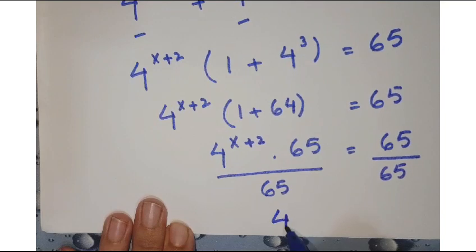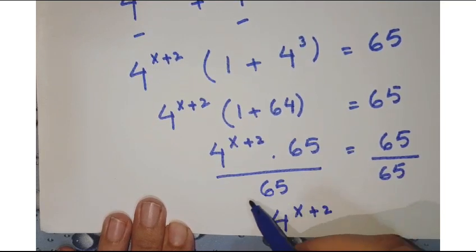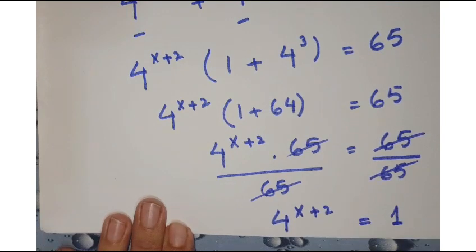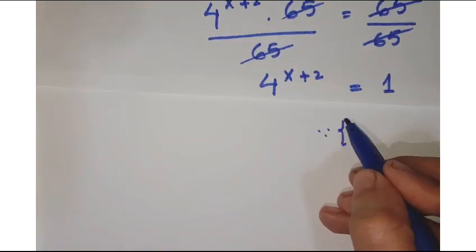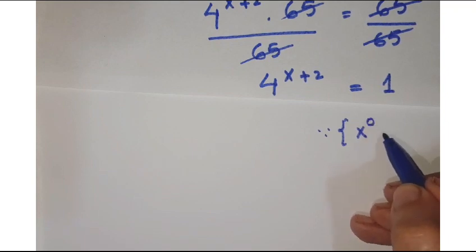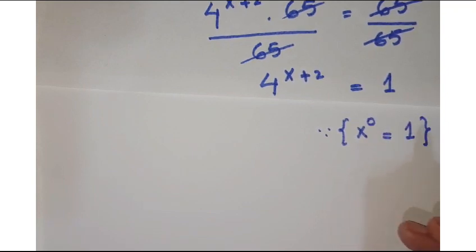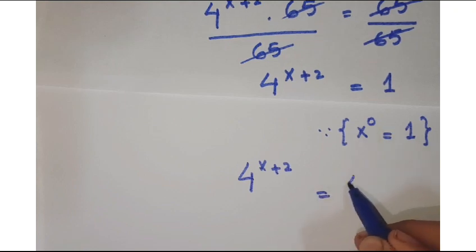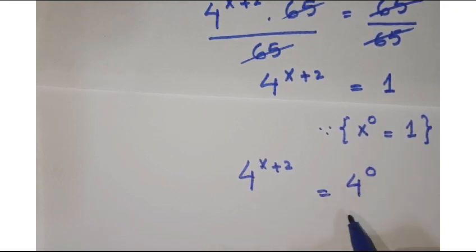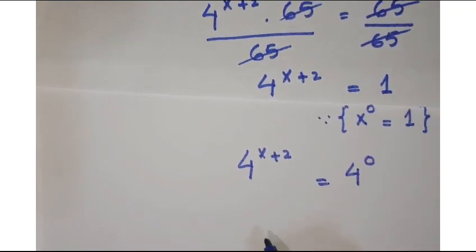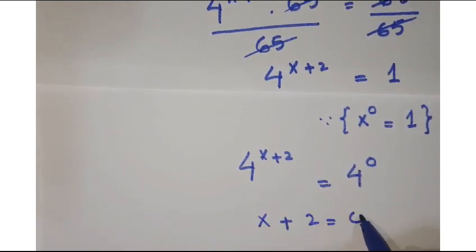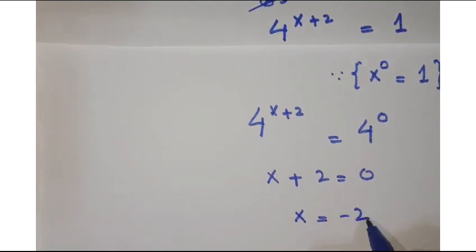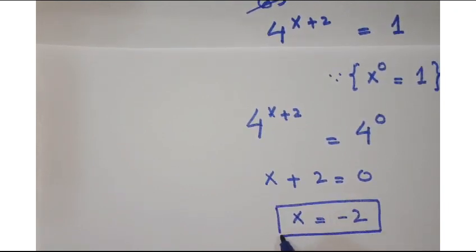So you have 4 to the power x plus 2 equals 1. Since you know that x to the power 0 equals 1, so replace this one with 4 to the power 0. Since we have the same basis, x plus 2 equals 0, or you can write x equals minus 2, and this is our required answer.